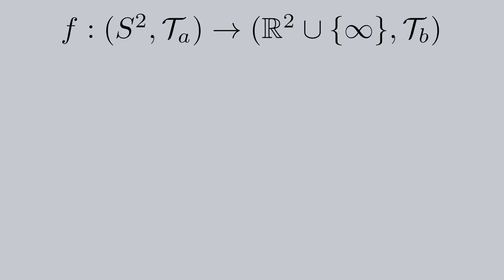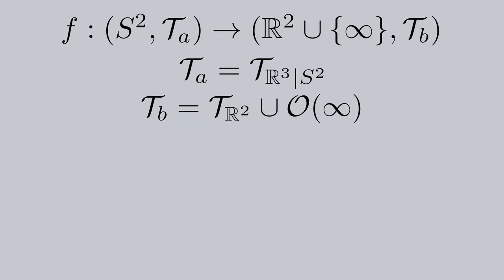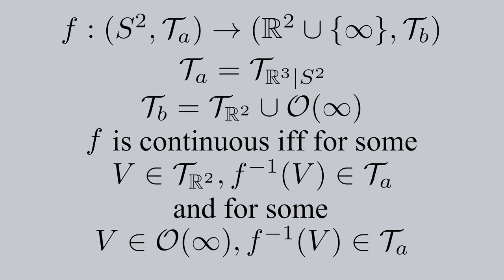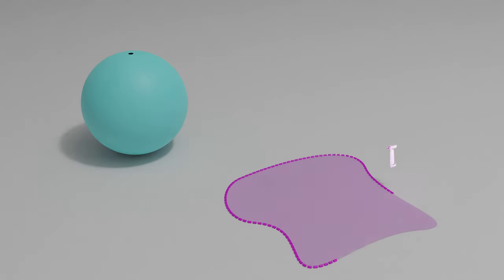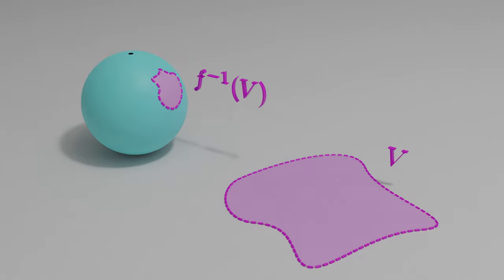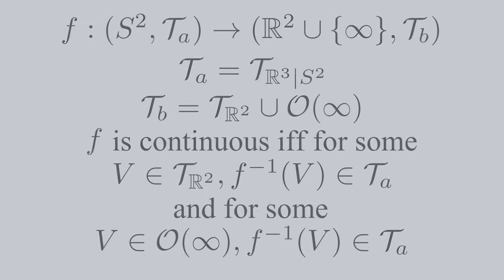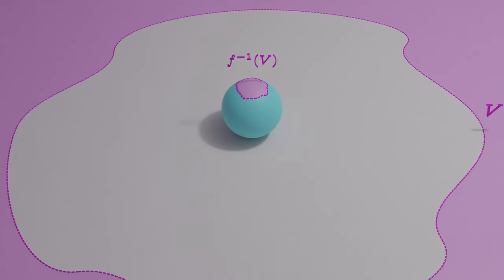Now that we've proven F is bijective, let's move on to continuity in the forwards direction. The topology on our sphere is tau A and the topology on our extended plane is tau B, where tau A is the standard subspace topology on our sphere and tau B is an extended topology on our extended plane. Tau B is a union of two sets of subsets, so there are technically two cases to prove continuity. We can say that our stereographic projection function F is continuous if and only if, for some V element of the standard topology on R2, the preimage of V is in tau A, and for some V element of the neighborhoods of the point at infinity, the preimage of this V is also in tau A. In our last video, we already showed that a V element of tau sub R2 has an open preimage in the punctured sphere, and the punctured sphere's topology is a subset of the entire sphere's topology, so we're good on this first case.